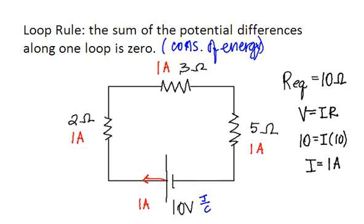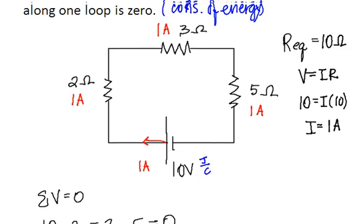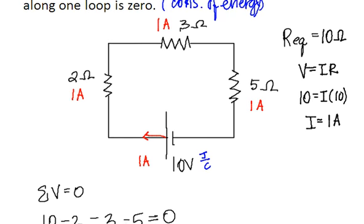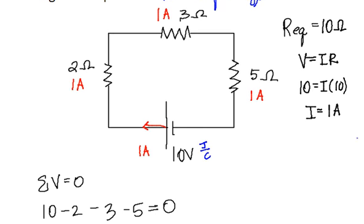Equation-wise, the sum of the voltages should be zero. In this case we gain 10 through the battery, we lose I times R across each resistor. So that would be 2 volts across here, 3 volts here, and 5 volts there. So we gain 10 through the battery, we lose 2 volts through the 2 ohm resistor, we lose 3 through the 3 ohm resistor, and we lose 5 through the 5 ohm resistor.